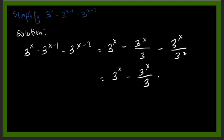3 to the x over 3 squared, that is 9. We factor out our 3 to the x because they are the common factors of all expressions. So if you are going to factor out this one, we are left with 1 in the first term minus 1 over 3 minus...